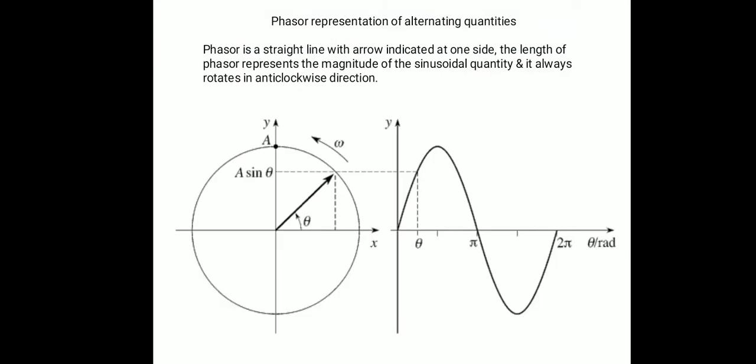In today's lecture we are going to see phasor representation of alternating quantity. Till now we have studied how to represent the alternating quantity with the help of waveform and mathematical expression. Another way of representing the alternating quantity is the phasor representation. There are two types of graphical representation: one is the waveform representation, and another is the phasor representation.